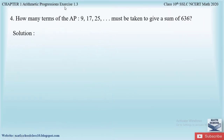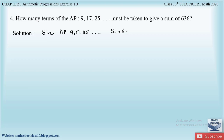In today's video let us solve question number four from exercise 1.3. It says: how many terms of the AP 9, 17, 25, ... must be taken to give a sum of 636? They are asking us how many terms, which means we have to find the value of n for the sum 636. The AP is 9, 17, 25, ... and Sn = 636; we have to find n.